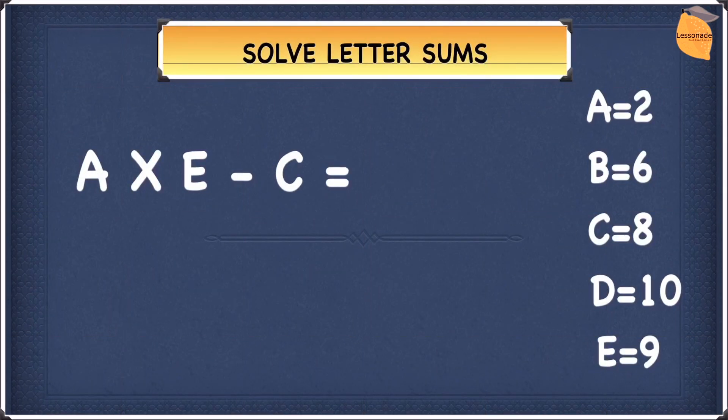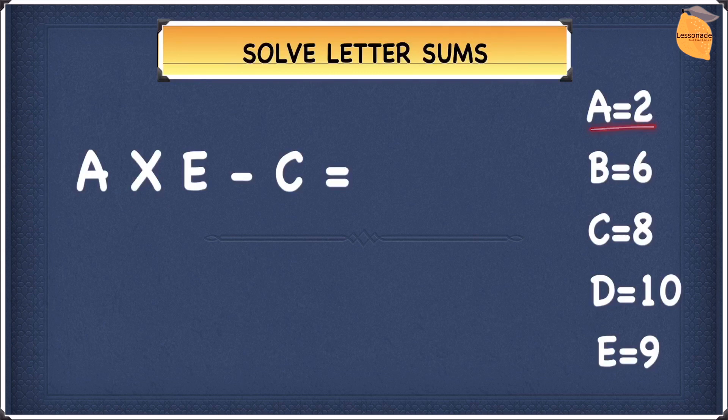In this example, we have A times E minus C. We have A equal to 2, B equal to 6, C equal to 8, D equal to 10 and finally E equal to 9.